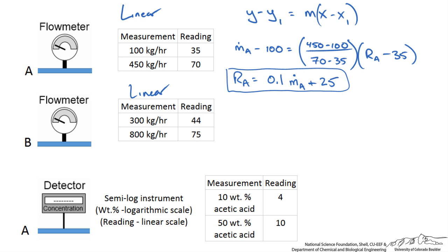We can repeat this process for the flow meter on stream B. The result is that the reading on stream B equals the following.